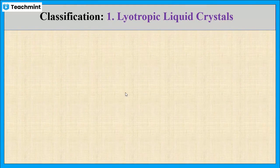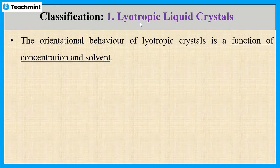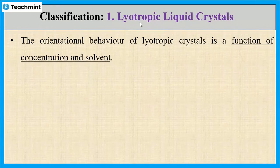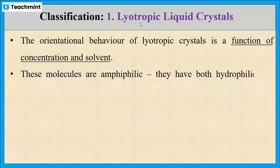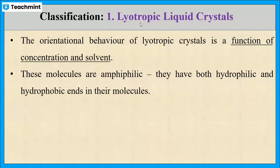First let us see lyotropic liquid crystals. In this type of liquid crystal, the orientational behavior is a function of concentration and solvent. These molecules will be amphiphilic, meaning they have both hydrophilic and hydrophobic ends in their molecules.